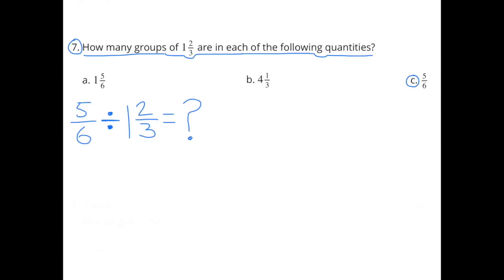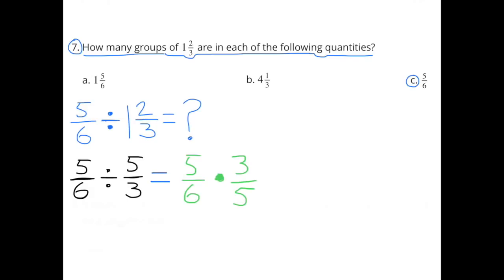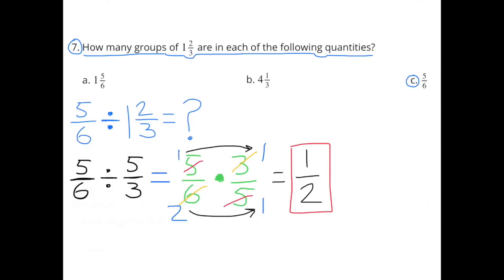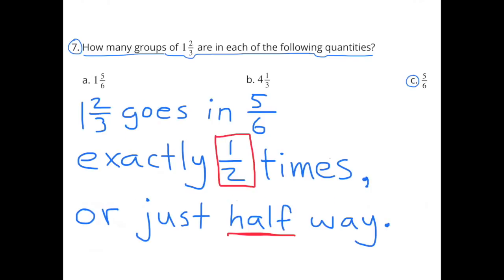Part C: How many groups of 1 and 2 thirds are in 5 sixths? 5 sixths divided by 1 and 2 thirds equals 5 sixths divided by 5 thirds, which is the same as 5 sixths times 3 fifths. Simplifying: 3 goes into 3 once, 3 goes into 6 twice, 5 goes into 5 once. Multiplying: 1 times 1 is 1, and 2 times 1 is 2, giving 1 half. So 1 and 2 thirds goes into 5 sixths exactly 1 half times, or just halfway.